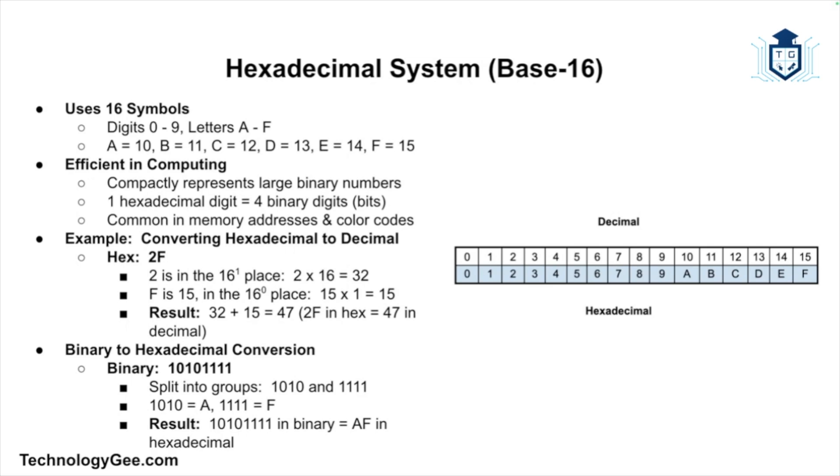Hexadecimal is often used in computing because it can represent large binary numbers more compactly. For example, one hexadecimal digit represents four binary digits or bits. This is why hex is frequently used in memory addresses and color codes in computing.